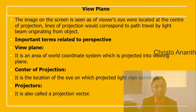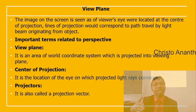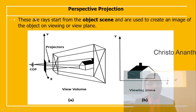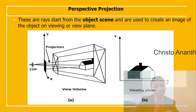The view plane is an area of the world coordinate system projected into the viewing plane. The center of projection is the location of the eye where projected light rays converge. Projectors, also called projection vectors, are rays starting from the object scene going through the center of projection to create an image on the viewing plane. For example, viewing a house gives two vanishing points corresponding to the x and y axes.